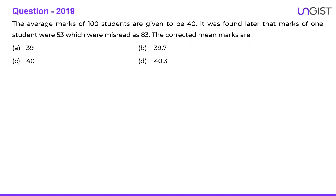In 2019, the question was: the average marks of 100 students are given to be 40. It was found later that the marks of one student were 53, which were misread as 83. The actual marks were 53 but it was misread as 83.